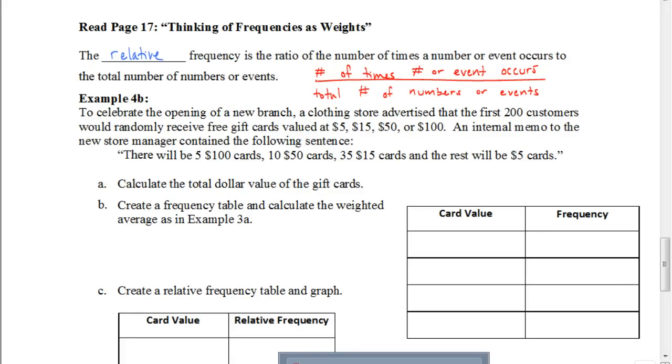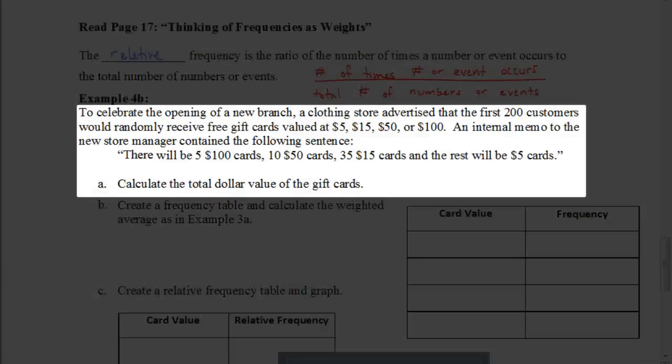So what we're going to do here, the first step, is calculate the total dollar value of all the gift cards. Remember, this is dealing with the first 200 customers, so that's going to help us when we do the $5 cards. We know there's going to be five $100 cards, so that would be $500 there, plus there's going to be 10 $50 cards, so that's another $500, plus there's going to be 35 $15 cards.